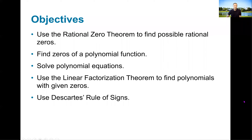As far as our objectives in this section: we will use the rational zero theorem to find all possible rational zeros, and then use that in combination with other techniques such as synthetic division to find the zeros of the polynomial function. We'll solve polynomial equations. We'll use the linear factorization theorem to write polynomials with given zeros — one of my favorite things to do in this section. And then the last topic is Descartes' rule of signs. We'll talk about what it is, but I don't really encourage continued use of it that much because it's not that beneficial.